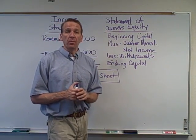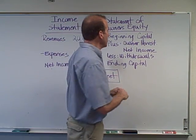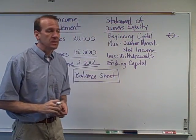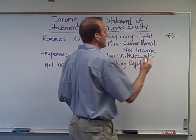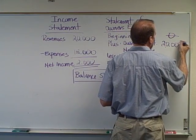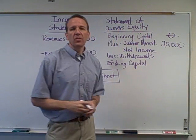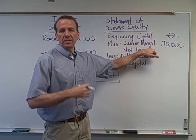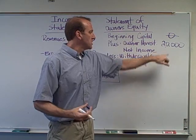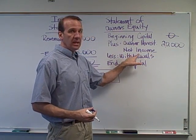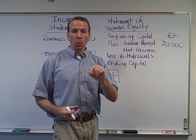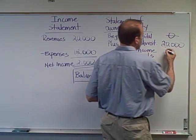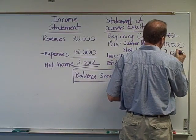Let's say this was a brand new company you just started, so the beginning capital balance would be zero. Now let's say you invested $20,000 in this business — you put $20,000 cash into the business, so plus the owner investment of $20,000. Then it says plus net income, because the net income is yours — it's your business. So we put $2,000 down for that net income.